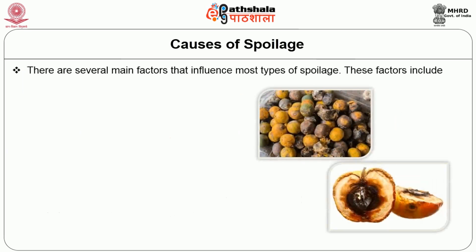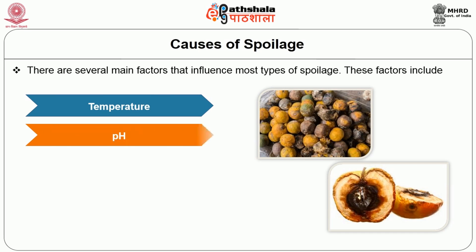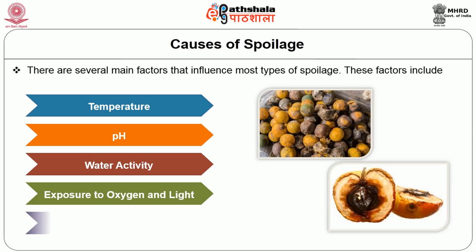There are several main factors that influence most types of spoilage. These factors include temperature, pH, water activity, exposure to oxygen and light, and nutrients or chemicals available in the food product.